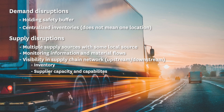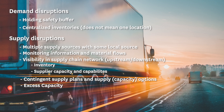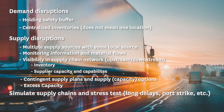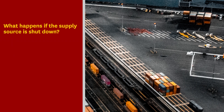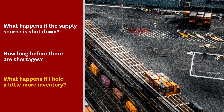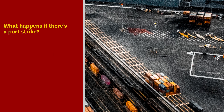A third thing companies can do is to have contingent supply chains — they negotiate the option to increase capacity with a different supplier. This is all planned out so that if something goes wrong at one supply source, you can immediately start working with another supply source that has planned and paid for excess capacity. Finally, firms can simulate their supply chains to stress test them: what happens if a supply source is shut down, how long before there will be shortages, what happens if demand declines? Such a simulation is an excellent vehicle for disruption planning.